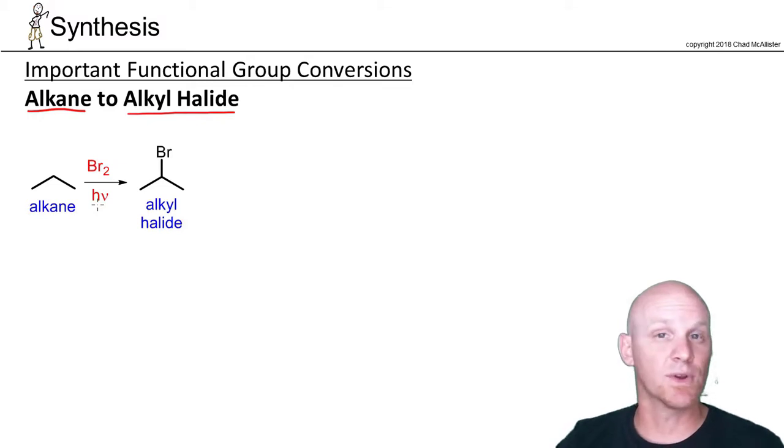So Br2 and light, or Br2 and heat, or Br2 and peroxide, any of those putting the bromine on the more substituted carbon is where we'll start here. Alkane to alkyl halide is the first thing you're going to do.